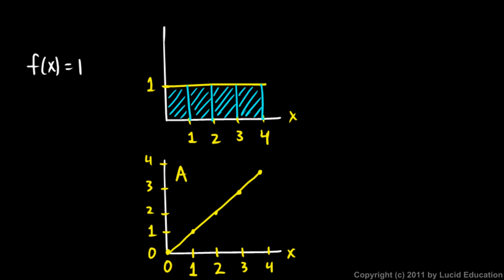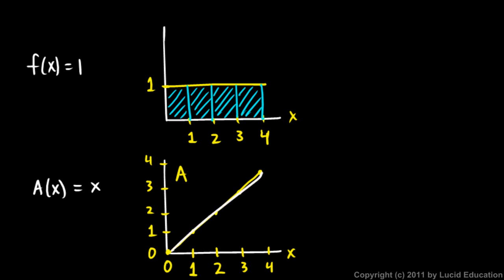So this is my area function — the area, which is a function of x. What function is that? That's the line A equals x. So A of x equals x. Clearly, the area here depends on this function f, and the area graph is itself a function of x.